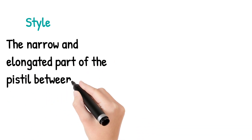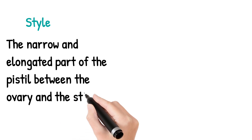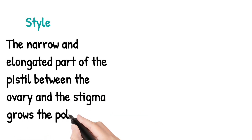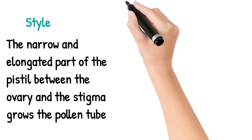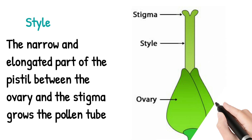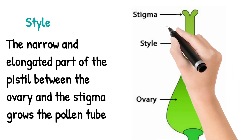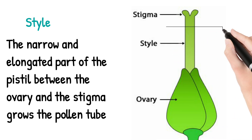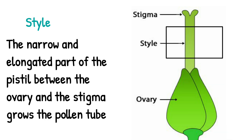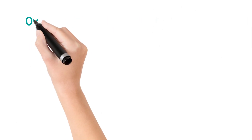Next we move on to the style. The style is a narrow and elongated part of the pistil. It is between the ovary and the stigma and also grows the pollen tube. You can see it is the center part of the pistil — situated between the stigma and ovary — which is called the style.